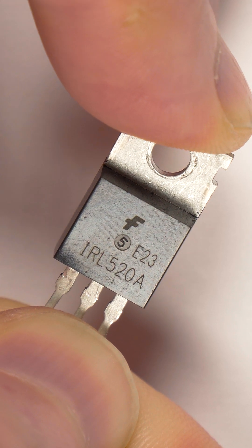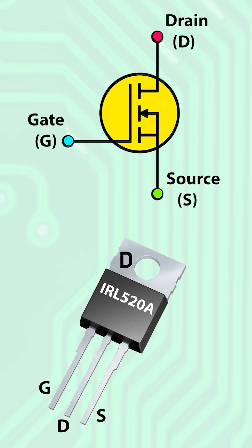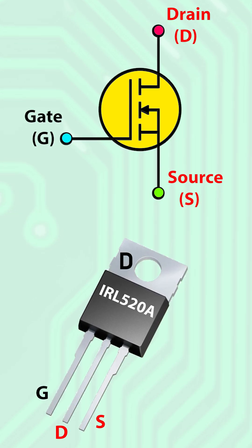The MOSFET is a type of transistor, and like any other transistor, it has three terminals. They are called source, drain, and gate.